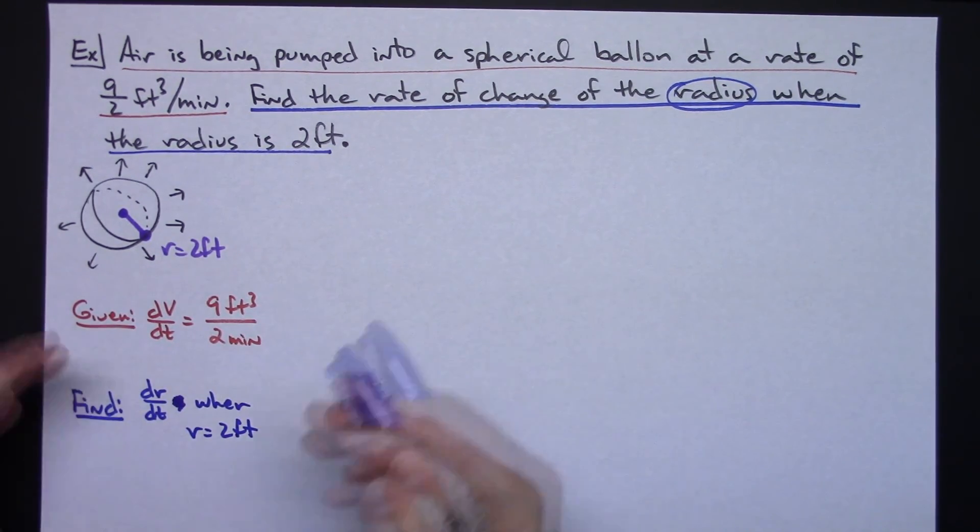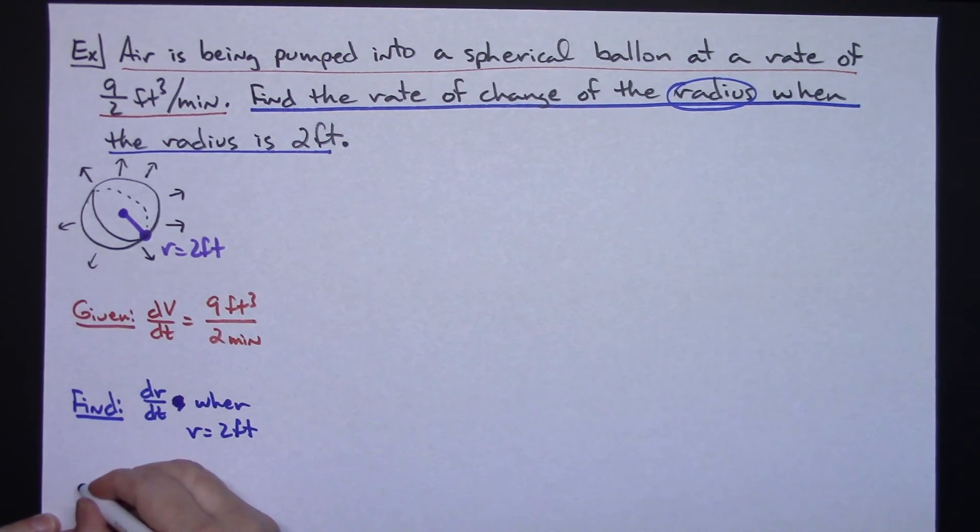And then we were talking about earlier, this is the overall volume that we're trying to do here. So hopefully you have your formula for the volume already memorized. The volume of a sphere is 4/3 π r³.